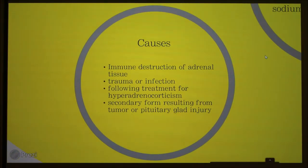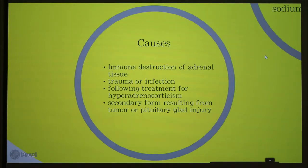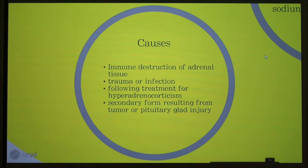Some causes of Addison's disease include the immune destruction of the adrenal tissue, a trauma or infection that reached the adrenal cortex, or overtreatment of hyperadrenocorticism, which then causes hypoadrenocorticism. There's also a secondary form that results from a tumor or pituitary gland injury — the anterior pituitary is not releasing ACTH, which goes in the blood to stimulate the adrenal cortex. So it can be one or the other cause.